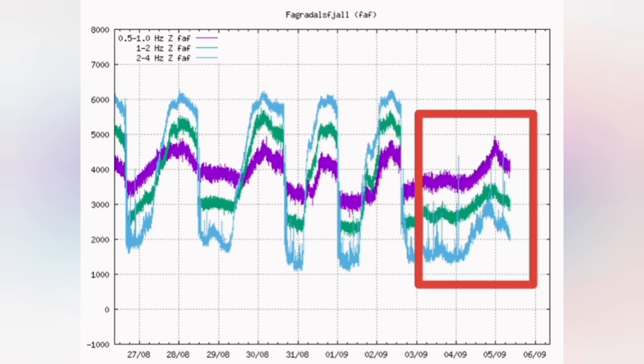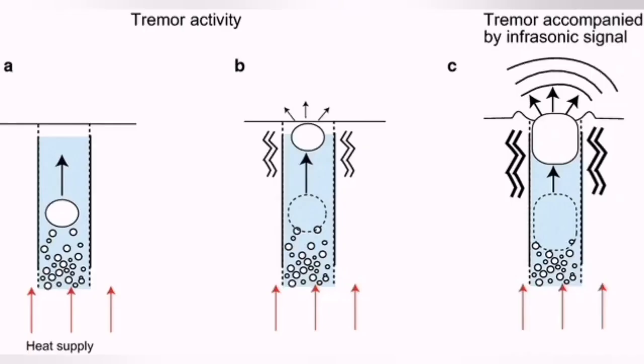The magma has to melt these slabs as they fall into it, which reduces the amount of heat available to actually create the bubbles that burst and cause the tremors that we see.